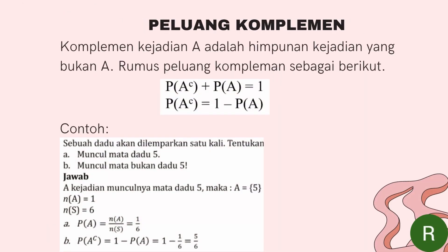Topik yang terakhir yaitu tentang peluang komplemen. Komplemen kejadian A adalah himpunan kejadian yang bukan A. Jadi ketika kita mendengar kata komplemen, yang harus menjadi kata kuncinya adalah 'bukan'. Rumus dari peluang komplemen adalah P(A^C) ditambah P(A) sama dengan 1, atau P(A^C) sama dengan 1 dikurangi P(A).